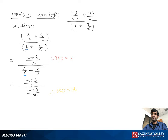We keep the numerator fraction as it is and flip the denominator fraction, giving us x plus 3 over 2 times x over x plus 3. Then we multiply top to top and bottom to bottom: x plus 3 times x, over 2 times x plus 3.